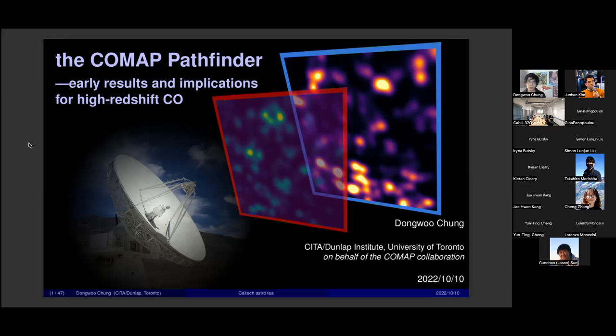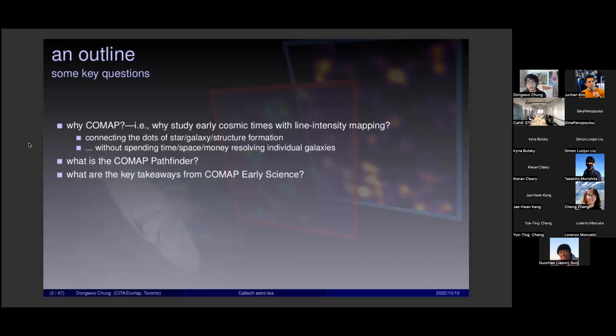COMAP is a project overall that is trying to apply the technique of line intensity mapping to studying high redshift star formation. I think it's important to start by contextualizing why you would want to use line intensity mapping to study star formation, particularly across the first several billion years of cosmic history to connect the dots of structure formation, star formation, galaxy assembly without necessarily resolving individual galaxies. Then I'll talk in more detail about the pathfinder, the instrument itself, the survey design, as well as takeaways from these early science papers that we published in July.